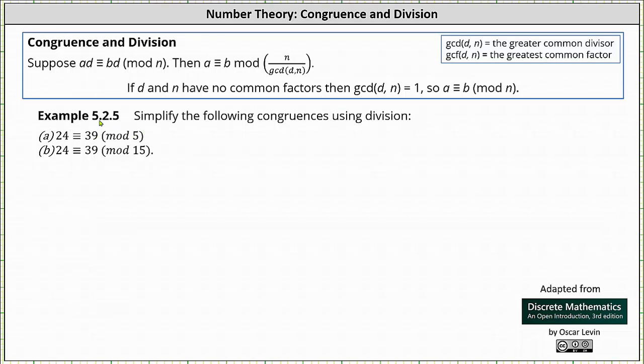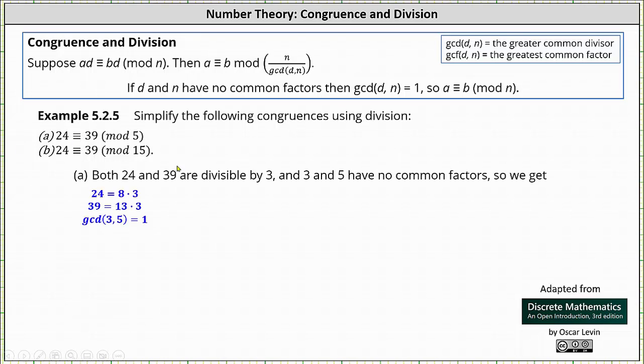We begin by determining the greatest common factor of 24 and 39. Both are divisible by three. 24 is equal to 8 times 3, 39 is equal to 13 times 3. The next step is to determine the greatest common divisor of the common factor of 3 and the modulus of 5.